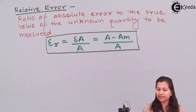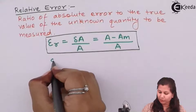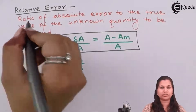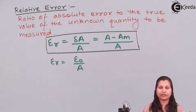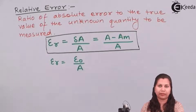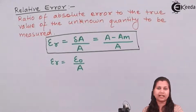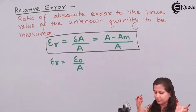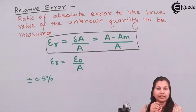Now when this absolute error ΔA is very small, it can be denoted as ε₀. So ε₀ / A is also the formula for relative error. This relative error gives us an indication of how good our measurement is — because the word 'relative' is there, it means we are finding how good our measurement is with respect to some criteria. Suppose we know that our instrument gives an error of ±0.5%; this is the accuracy of the instrument, and we are using it to measure length.